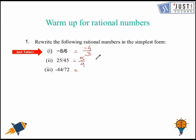And the last number which we have here is -44 out of 72, which can be simplified by dividing both the numbers by 4, which will give us -11 out of 18. Check if all your answers match with here. Congratulations.